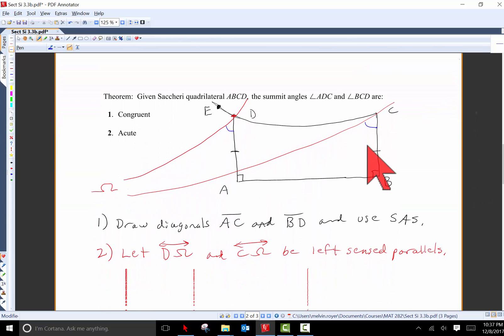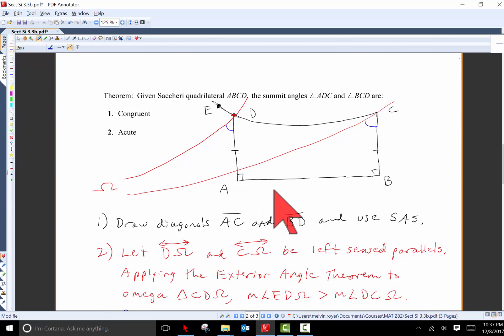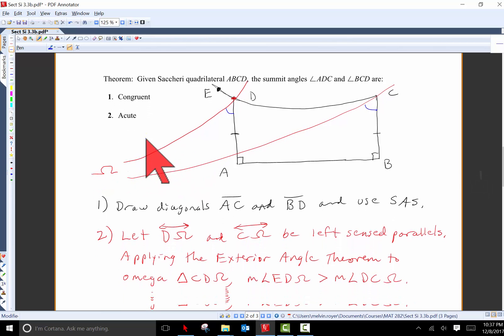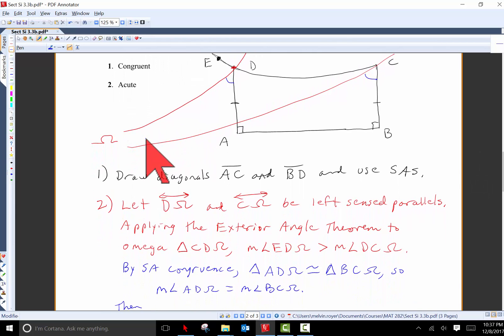Next result. Given a Saccheri quadrilateral ABCD here in black, the so-called summit angles ADC and BCD are first of all congruent and then second of all acute. They have measure less than 90 degrees. For the congruent part, just draw a couple of diagonals here and use side angle side a couple of times. I think this problem is actually on one of the sample question parts.